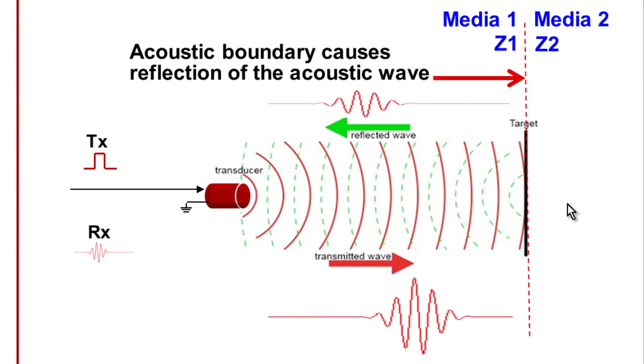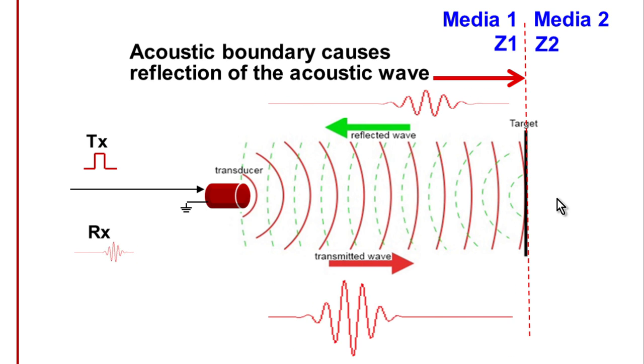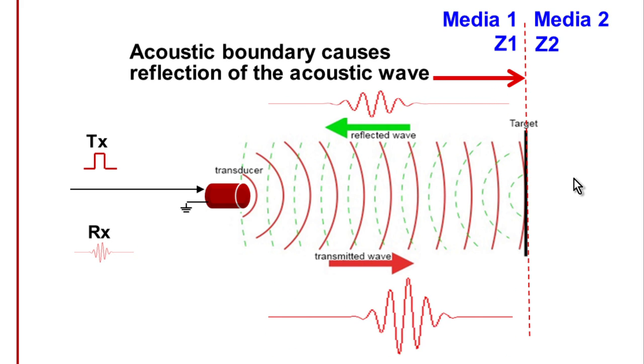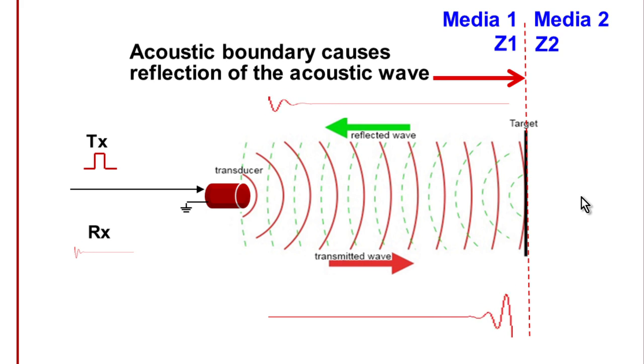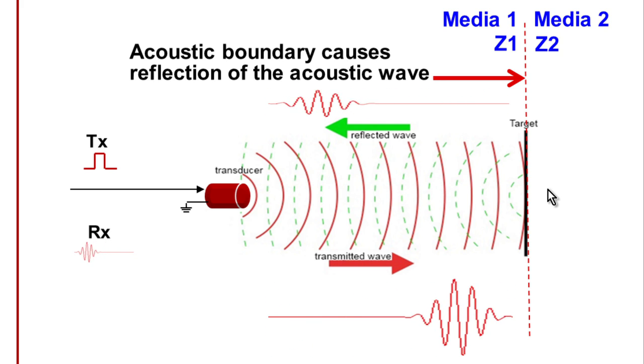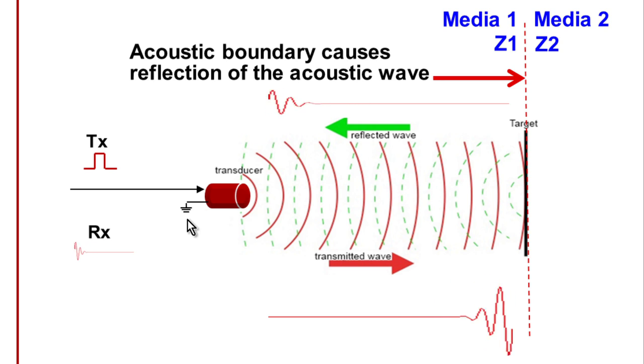An acoustic boundary is determined by a difference in two medium with two different speeds of sounds. At that boundary, some energy will pass through the boundary and some energy will not. The energy that doesn't pass through is reflected back towards the transducer.